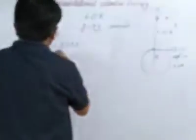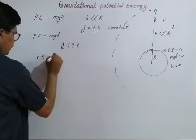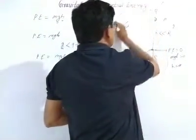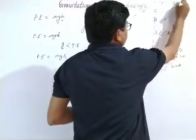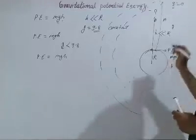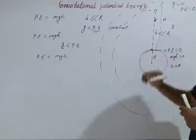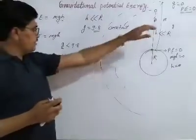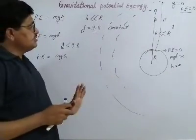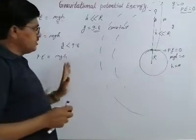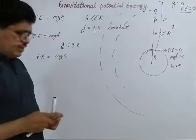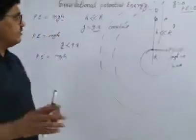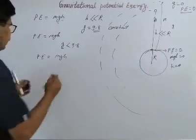As the height of the object goes on increasing toward infinity, the acceleration due to gravity becomes zero and the potential energy at that point also becomes zero. If the height is very very large, the gravitational force exerted by the earth on that object is negligible and the potential energy becomes zero.